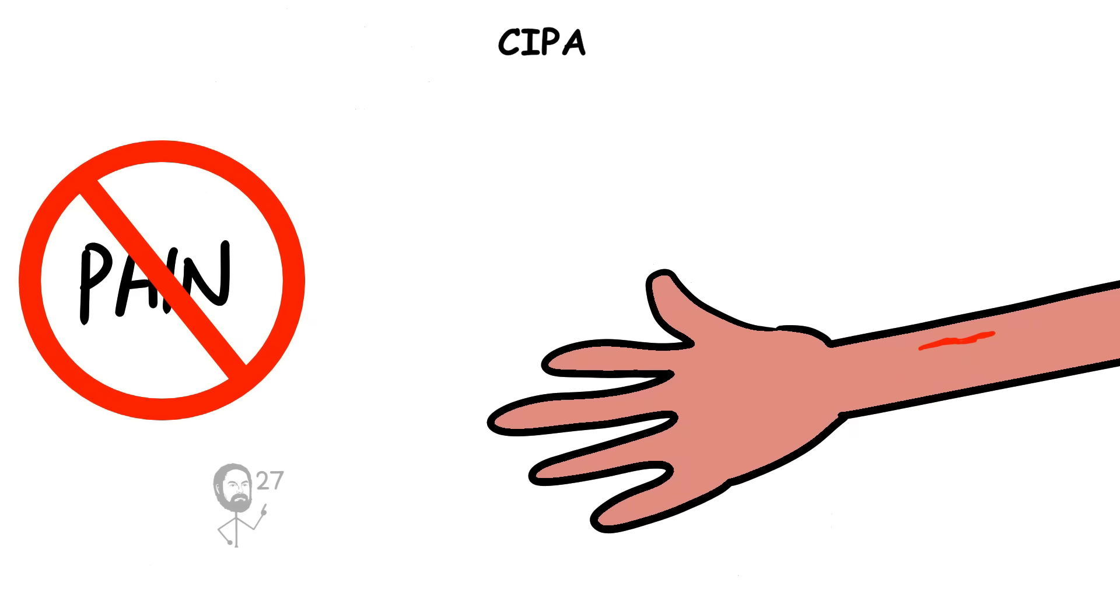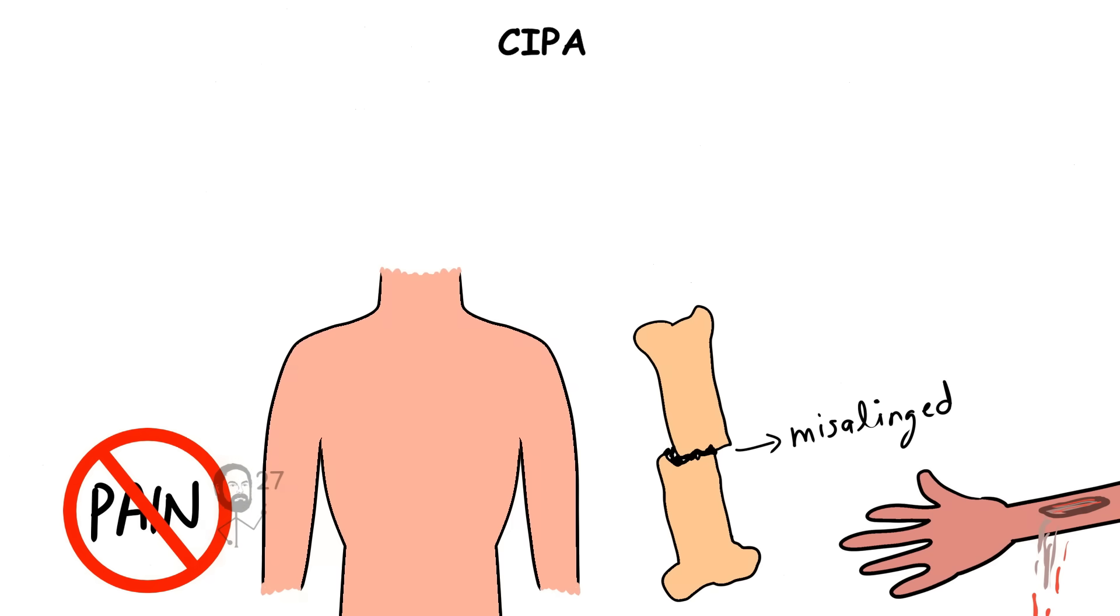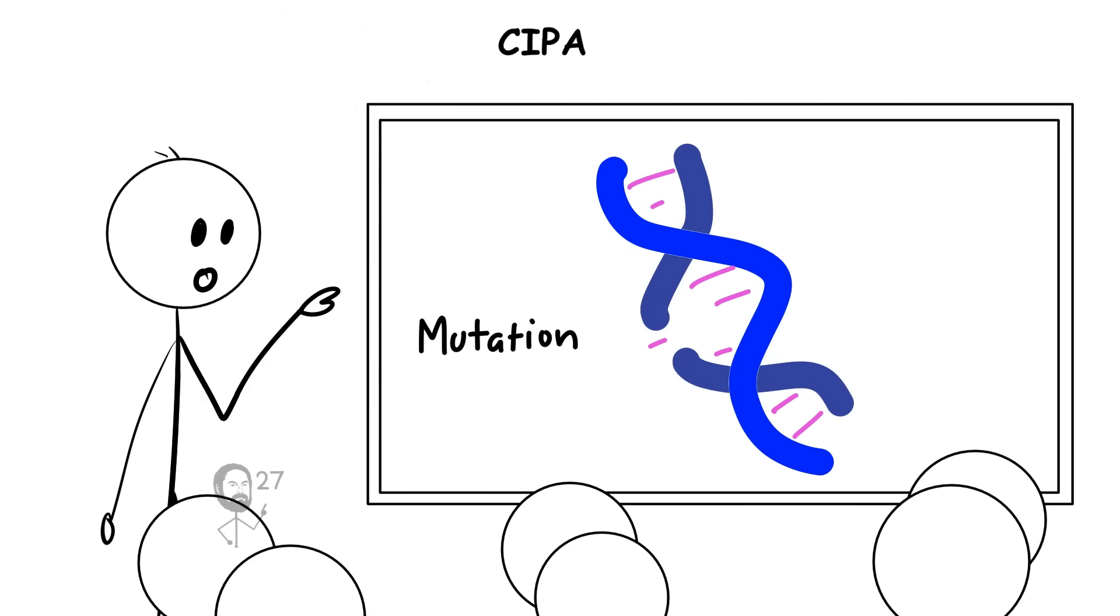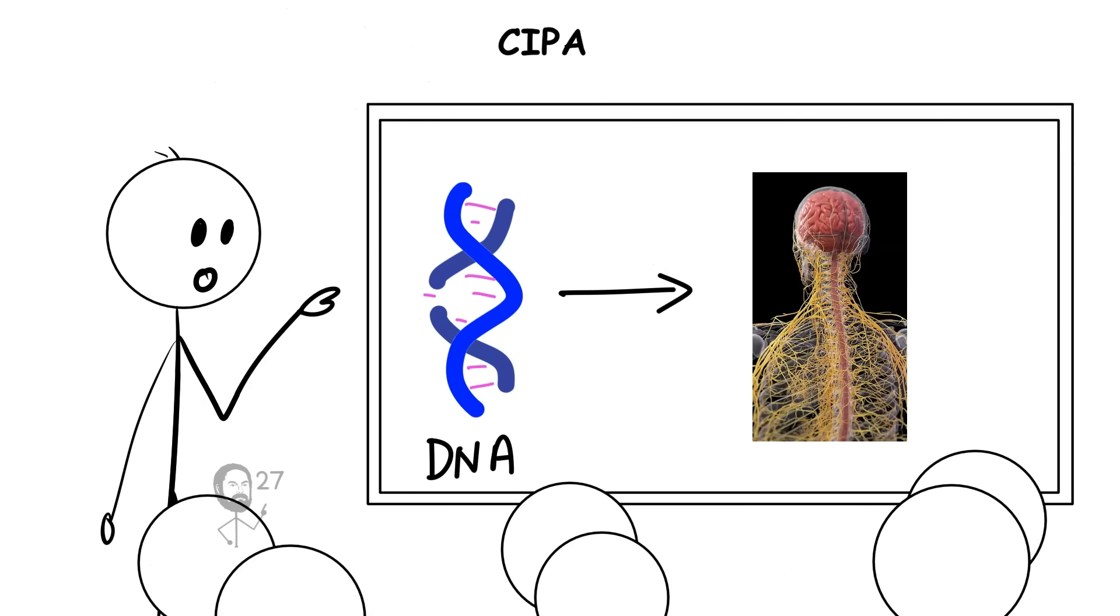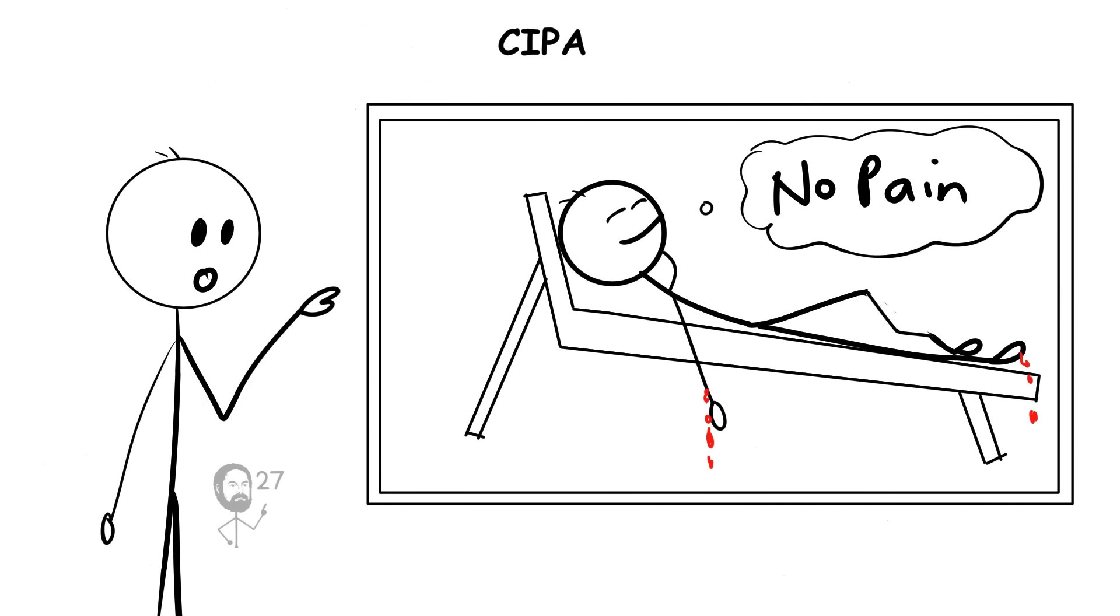Without it, small wounds can become severe, bones may heal incorrectly, and overheating can occur because sweating is often impaired in the same condition. Still, the mutation demonstrates just how profoundly DNA can alter the way the nervous system interprets the world, creating people who experience life without the typical boundaries of discomfort.